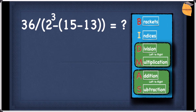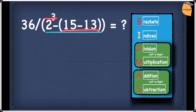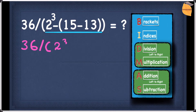Now let's have a look at this example. In this example let's first see if we have any brackets — we do. We have an inner bracket and an outer bracket. We always do the inner bracket first, which is 15 minus 13. So rewriting: 36 divided by, then brackets, 2 cubed, and then the inner bracket 15 minus 13 gives an answer of 2.